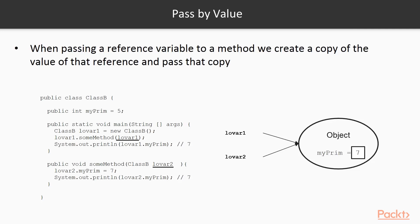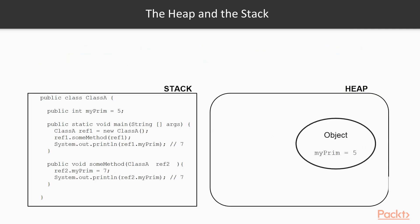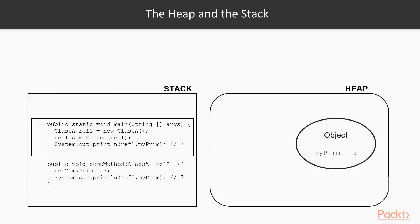In Java everything is a reference and everything is an object. We are getting closer and closer to understanding what are the constituting blocks of a Java program. These blocks are the stack and the heap. The stack is made of methods that enter the stack as they are being invoked, and these methods will have local variables. So methods and their local variables go into the stack. This stack grows as more methods are being invoked. The heap, however, will contain objects and within them instance variables. These are the heap and the stack, and these are what stand behind a Java program being executed.